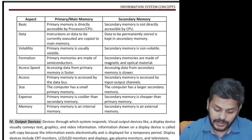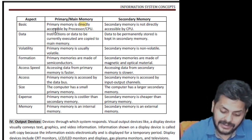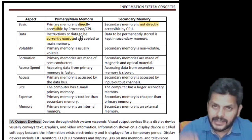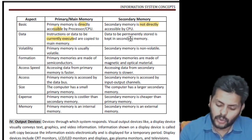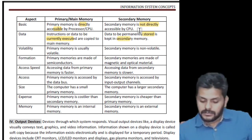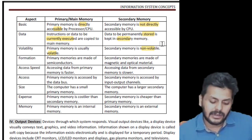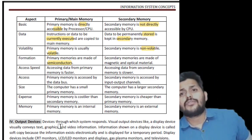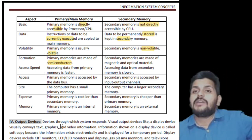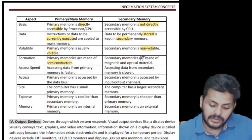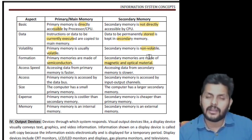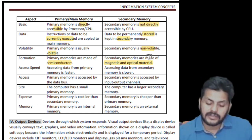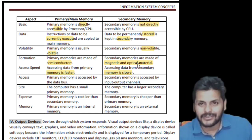From the comparison table: primary memory is directly accessible; secondary memory is not directly accessible. Instructions and data currently being executed are in primary memory; secondary memory is just storage. Primary memory is volatile; secondary memory is non-volatile. Primary memory is made of semiconductors — hence costly. Secondary memories are made of magnetic and optical material — cheaper, giving high space. RAM is faster; secondary storage is very slow and only stores.